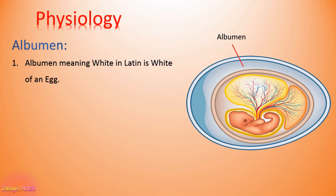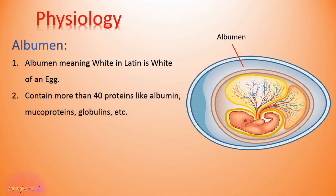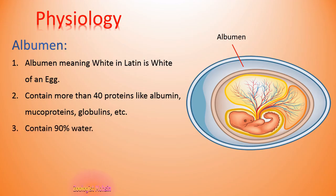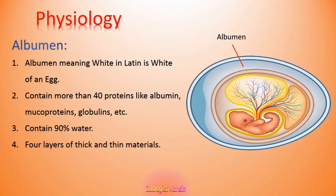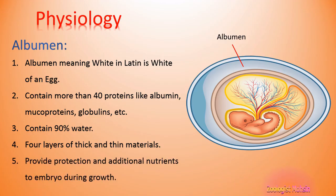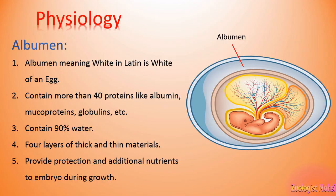Albumin means 'white' in Latin and is the white of an egg. It contains more than 40 proteins, such as albumin, mucoproteins, and globulins. Albumin contains 90% water. There are four layers of thick and thin materials in the albumin. Its physiological function is to provide protection and additional nutrients to the embryo during growth.